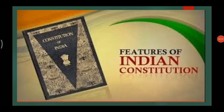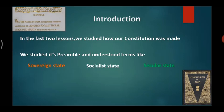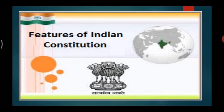Dear students, hope you are all well. Today we will begin with a chapter in civics. The name of the chapter is 'Features of the Constitution.' In the last two lessons we studied how our constitution was made, its preamble, and understood terms like sovereign state, socialist state, secular state, democratic state, and republic state. The goals expressed in the preamble are the characteristic features of our constitution, and apart from this, the constitution has also other features.